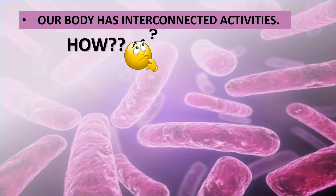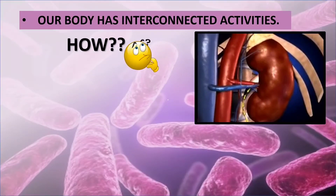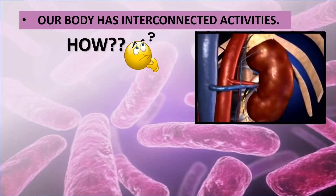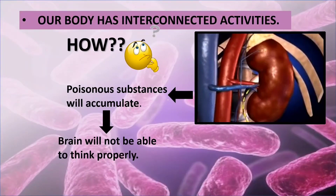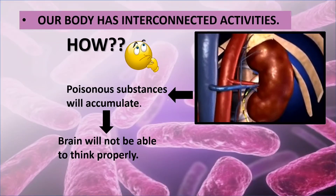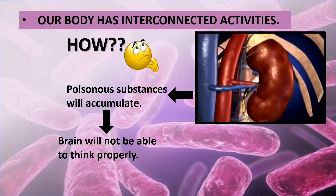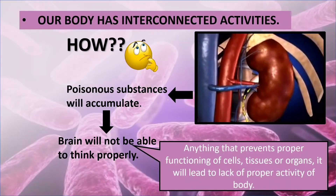For example, the kidney's function is to filter urine. If the kidneys are not doing their function, poisonous substances will start accumulating in the body. In such a condition, the brain will not be able to think properly because of these poisonous substances. So because one organ is not functioning properly, the activity of another organ gets affected.